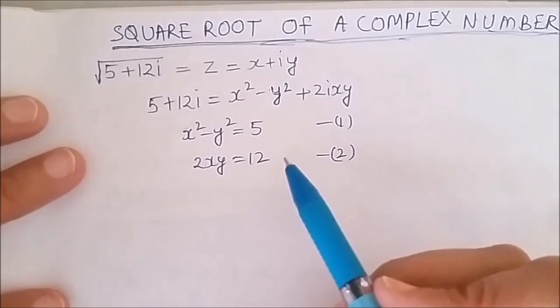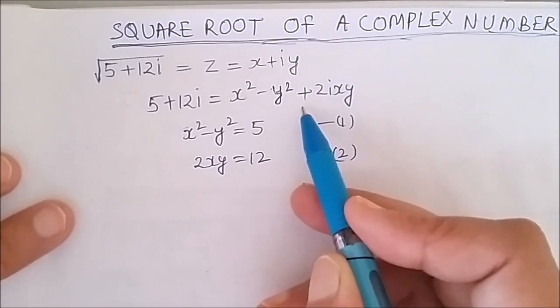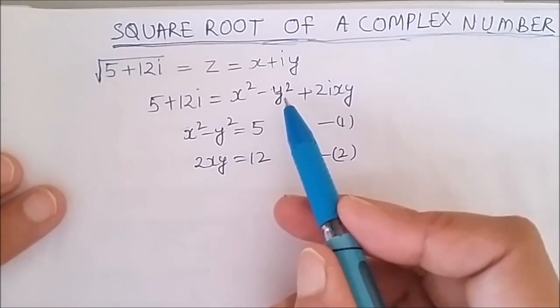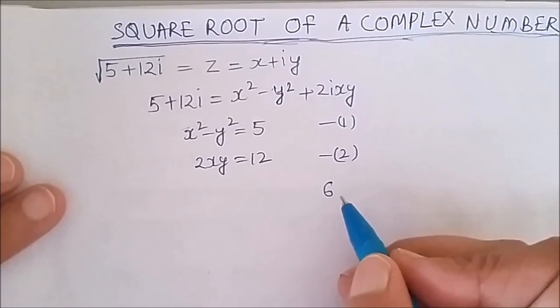There is one easier method also. I will take half the coefficient of i. The coefficient of i here is 12, so half of that is 6. Now I will decompose 6 into 2 factors.